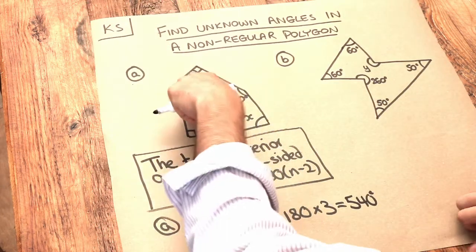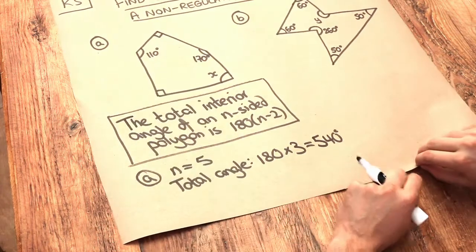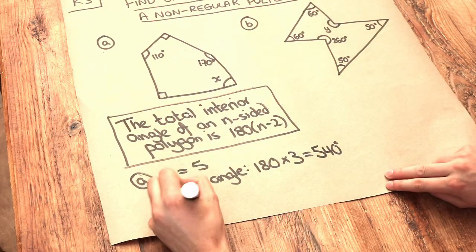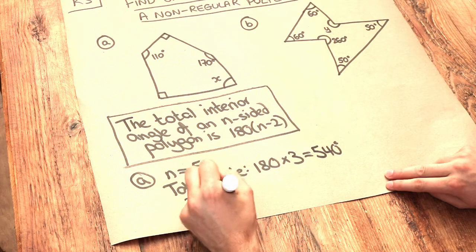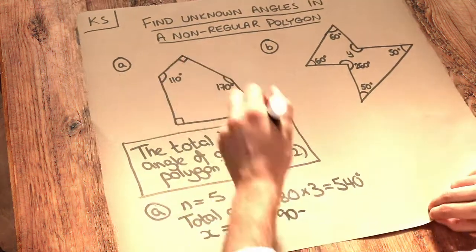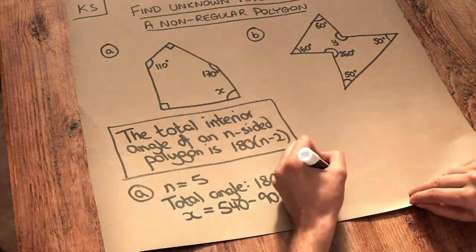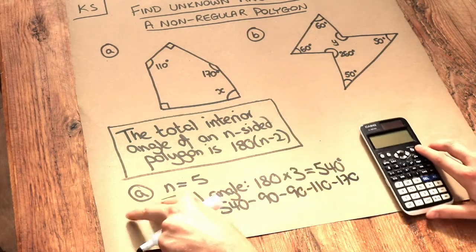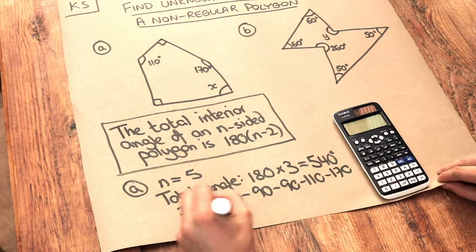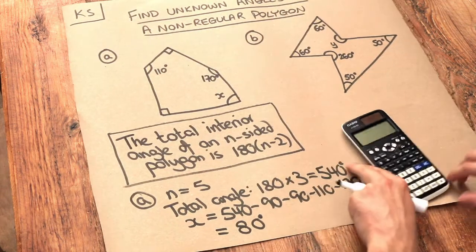Now if we know the total of all these angles is 540, we can just subtract all these other angles from 540 to work out x. So x is going to be 540 subtract the 90, subtract another 90, subtract the 110, subtract the 170, and if I do that on my calculator, that gives me an angle of 80 degrees, and that looks sensible. It's just less than a right angle.